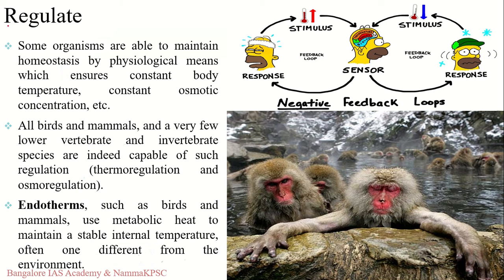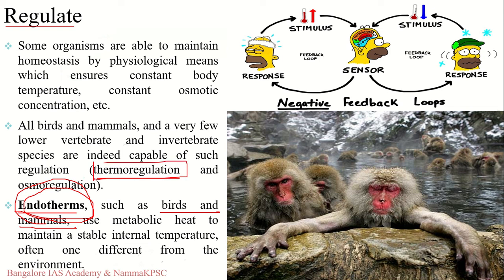The first way of maintaining homeostasis is regulation — this is what we have been discussing. Regulation is when the body's internal system tries to regulate internal temperature in accordance with the external environment. Birds and mammals are capable of something known as thermoregulation. Birds and mammals are endotherms — warm-blooded animals — and thermoregulation is an internal mechanism to maintain body temperature. Warm-blooded animals can increase or decrease heat loss by dilation or constriction of blood vessels respectively.